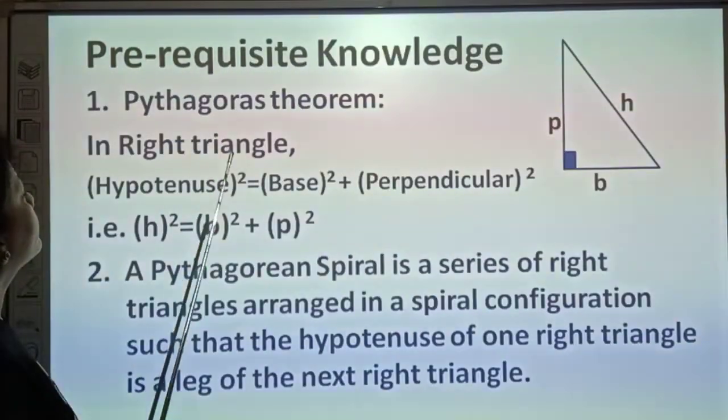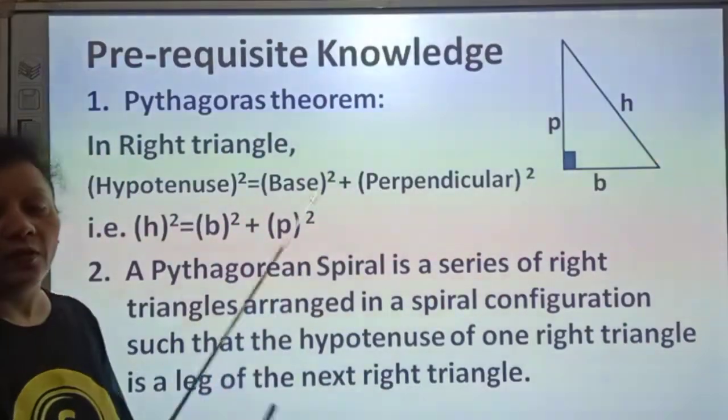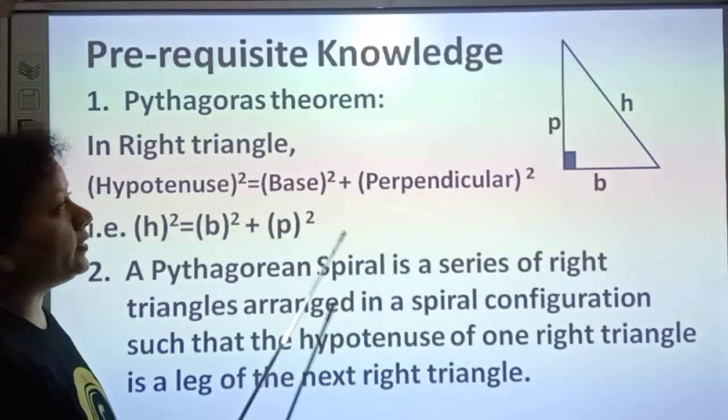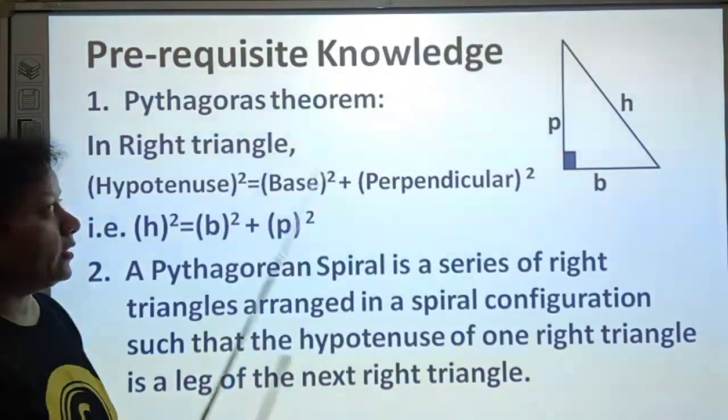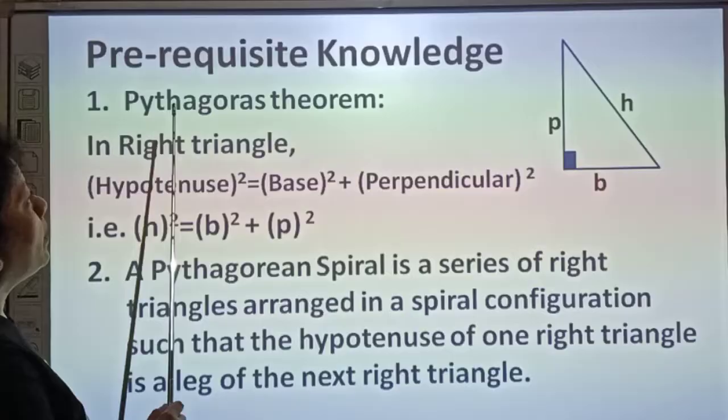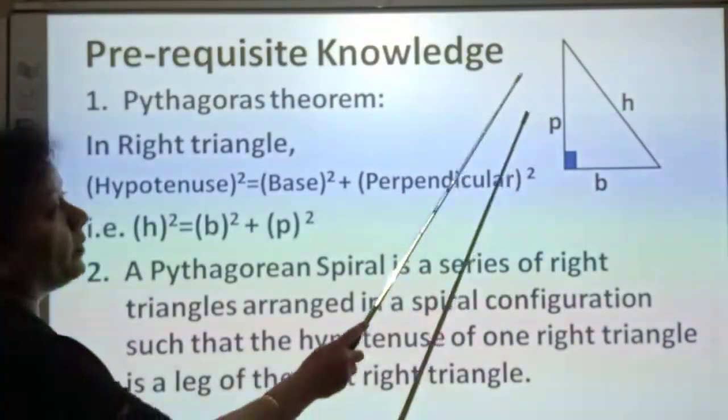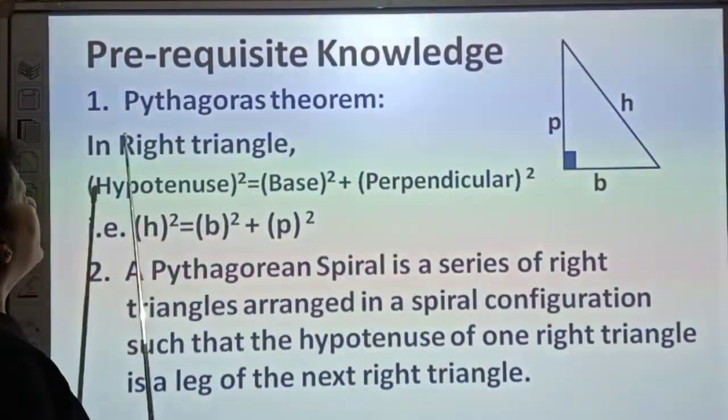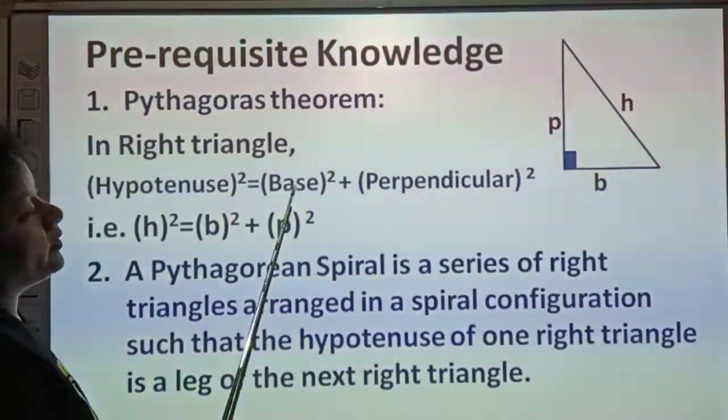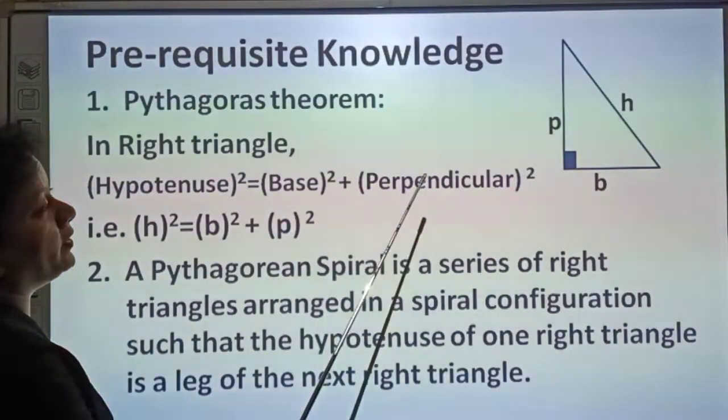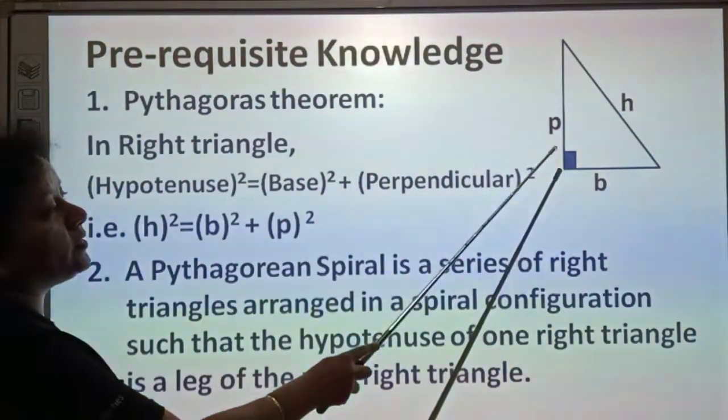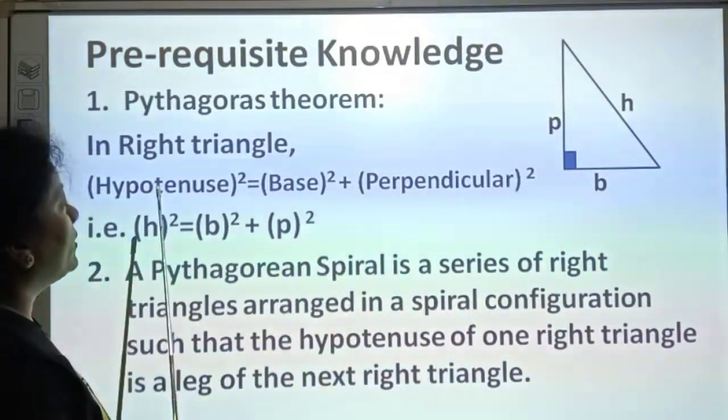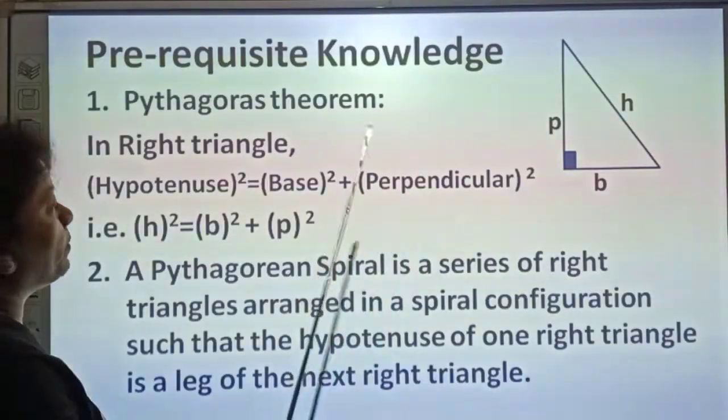Next, the prerequisite knowledge. The required knowledge to understand the project is first the Pythagoras theorem, which is applied on right triangles. What is the theorem? Hypotenuse squared equals base squared plus perpendicular squared. Hypotenuse is the side opposite to 90 degree angle.